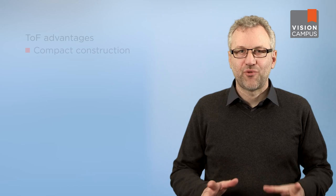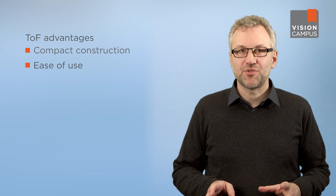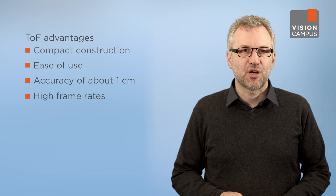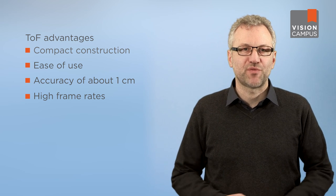This system is able to capture both depth and intensity information simultaneously for every pixel in the image. These cameras have great potential for machine vision applications because they natively capture the depth information that must be inferred by traditional imaging systems. Because the depth information is independent of the intensity and object color, you can separate the object from the background with relatively simple algorithms. Furthermore, its compact construction, ease of use, accuracy of about 1 cm, and high frame rates make TOF cameras an attractive solution for a wide range of applications.